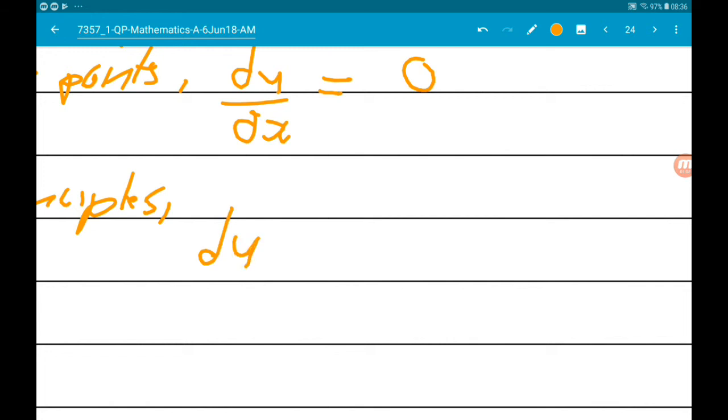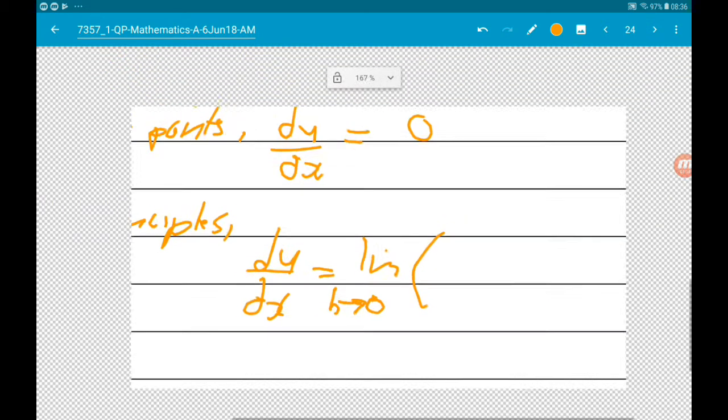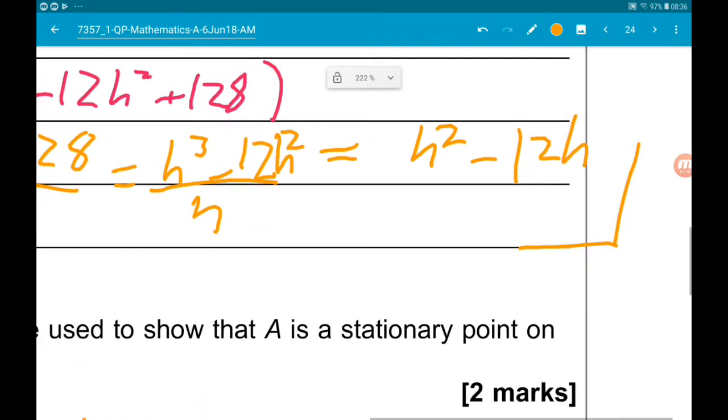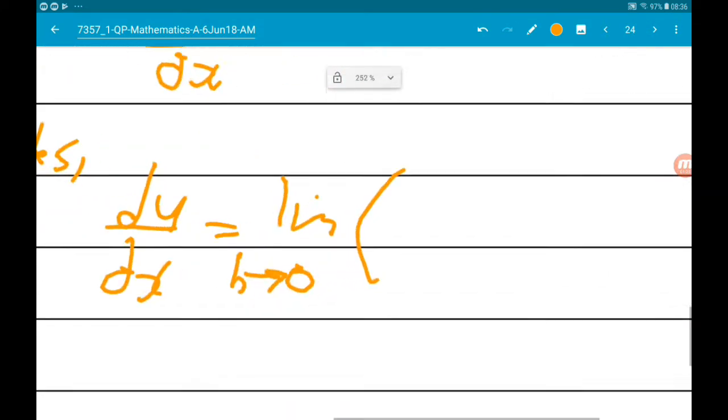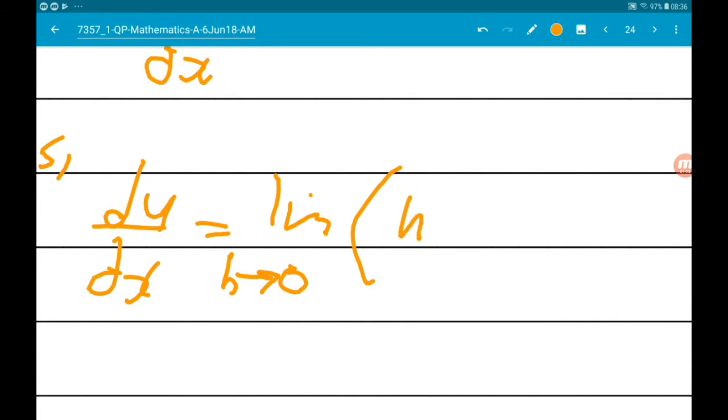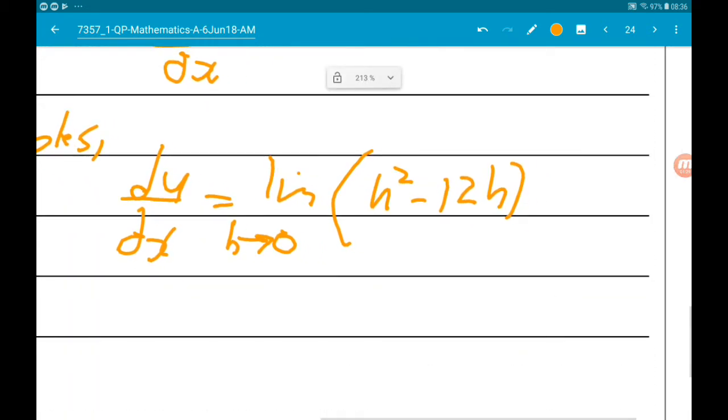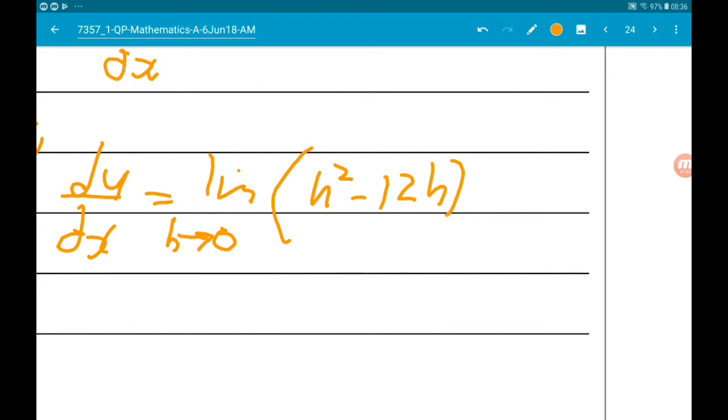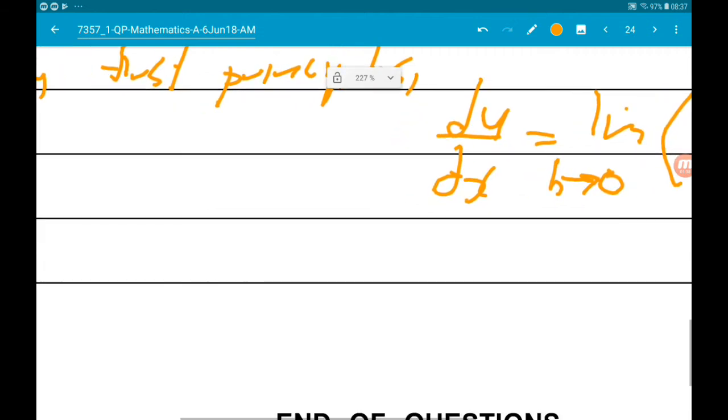Dy by dx is equal to the limit as h tends to zero of h squared minus 12h. As h tends to zero, that clearly tends to zero. Therefore A is a stationary point.